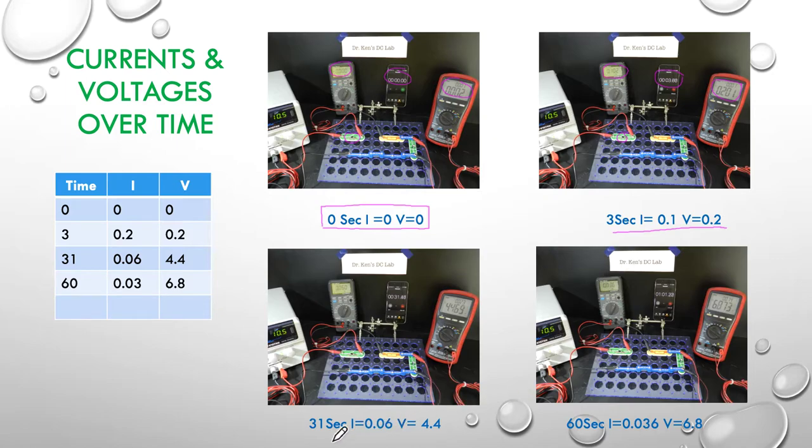Next, we come down here to 31 seconds. I actually took a photograph every 10 seconds, but it was just easier to display it every 30. So every 30 seconds, you can see our current has now dropped to 0.06 and our voltage has gone up to 4.4.